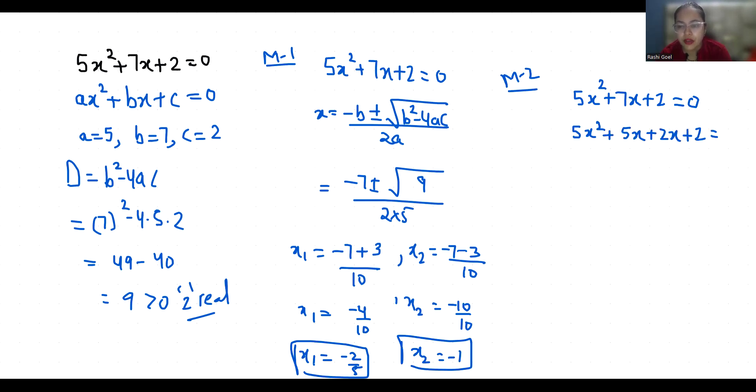Now from first term if 5x is common, so x + 1, and if 2 is common, x + 1 = 0. If x + 1 is common, so 5x + 2 = 0.